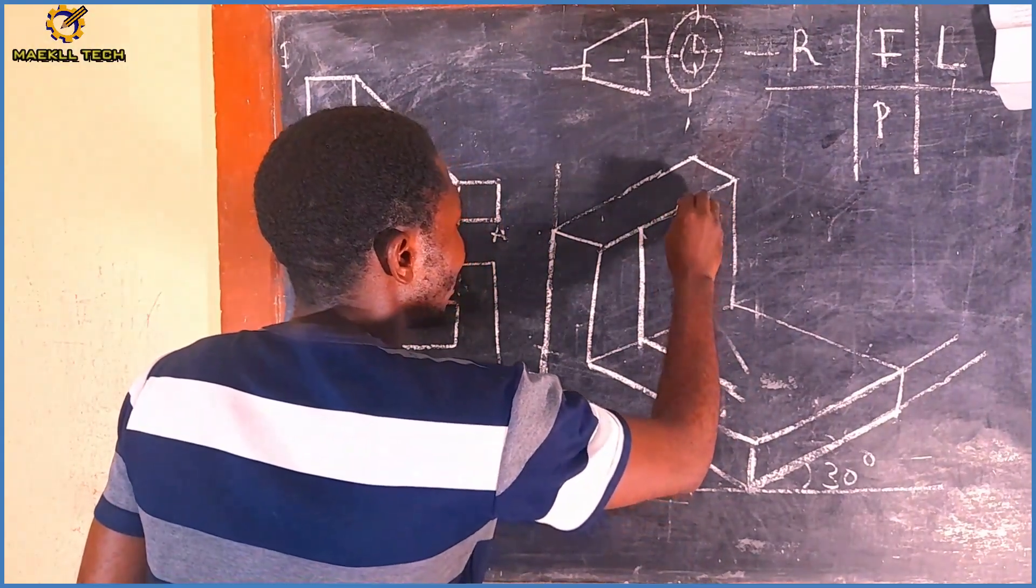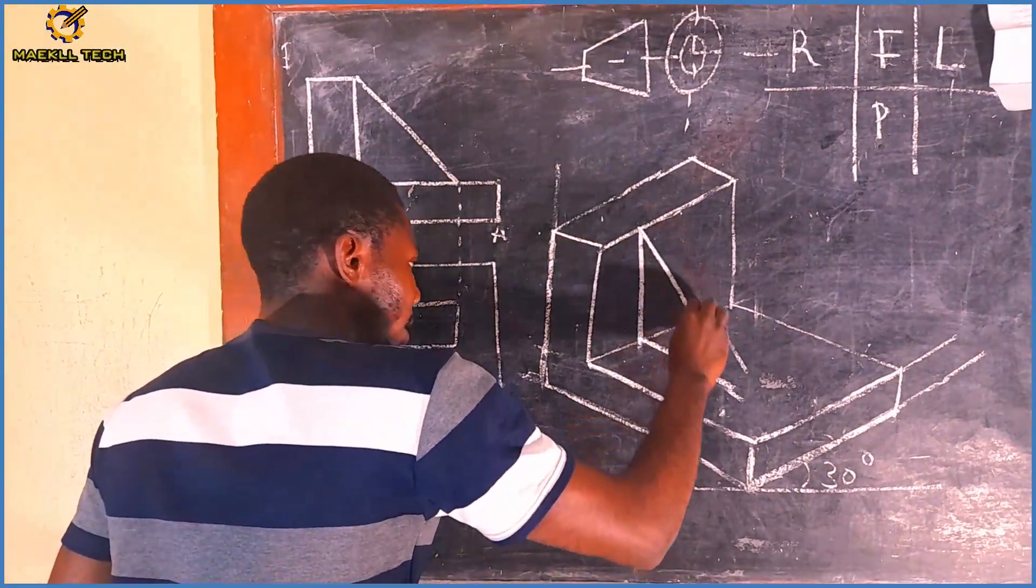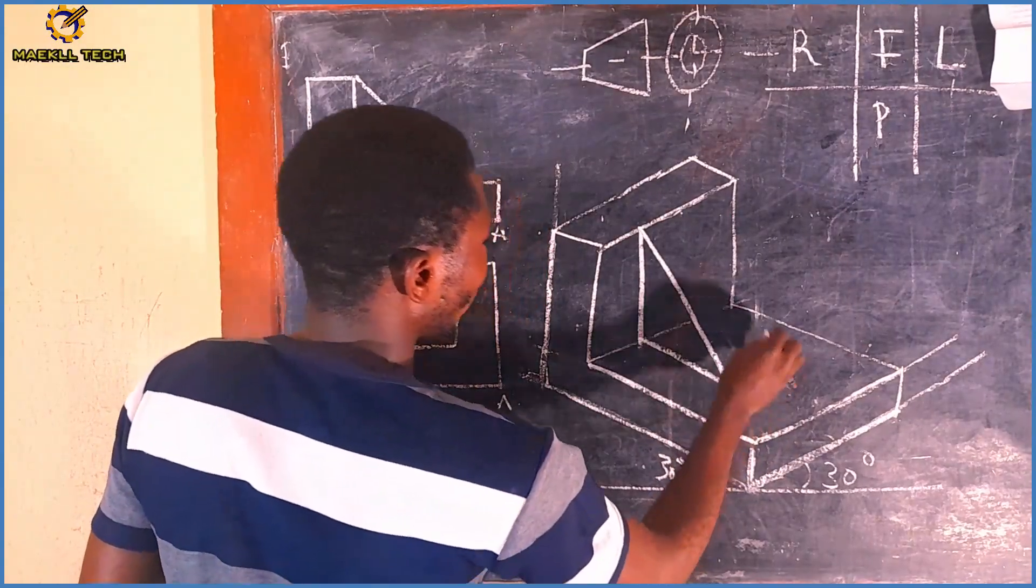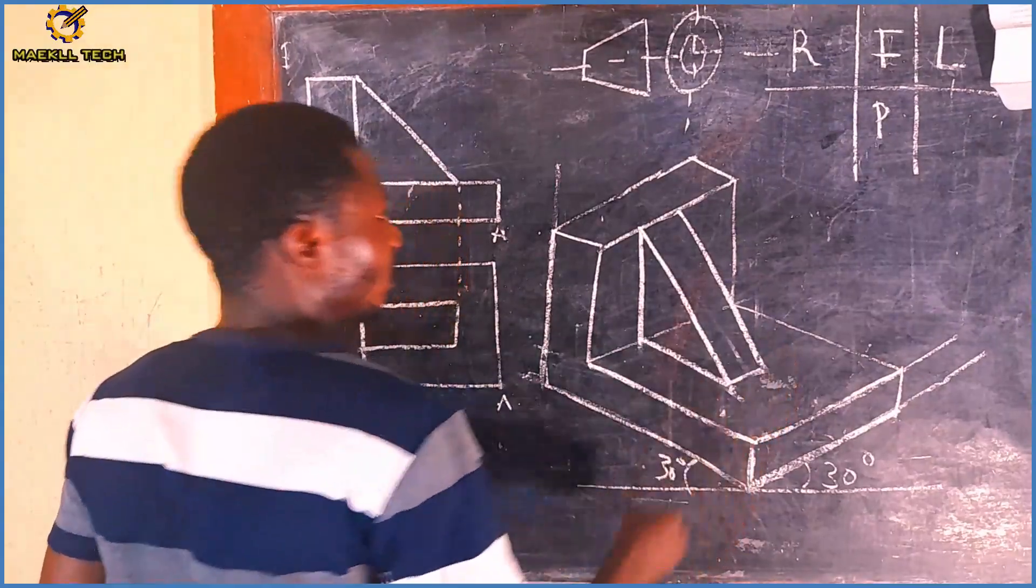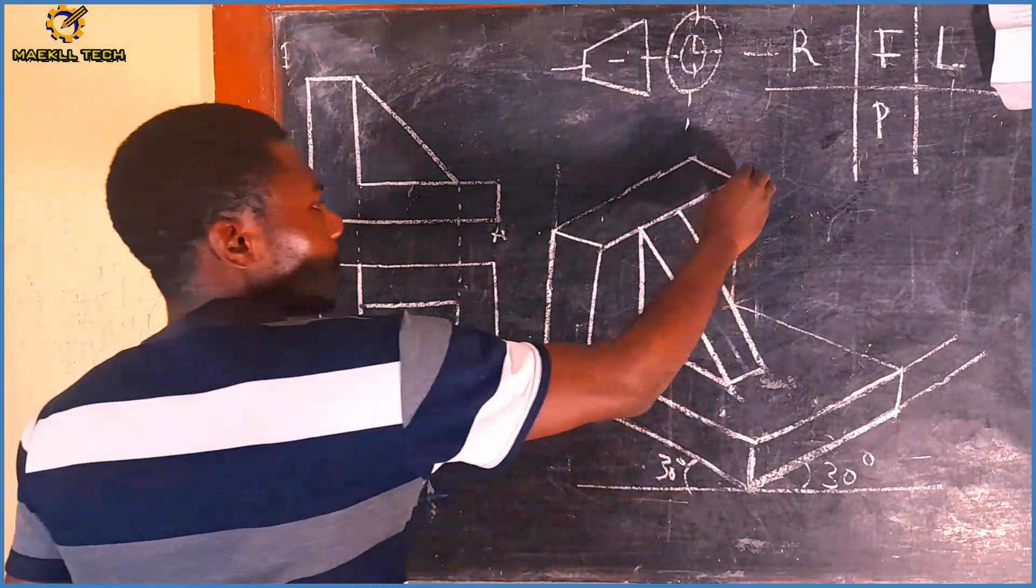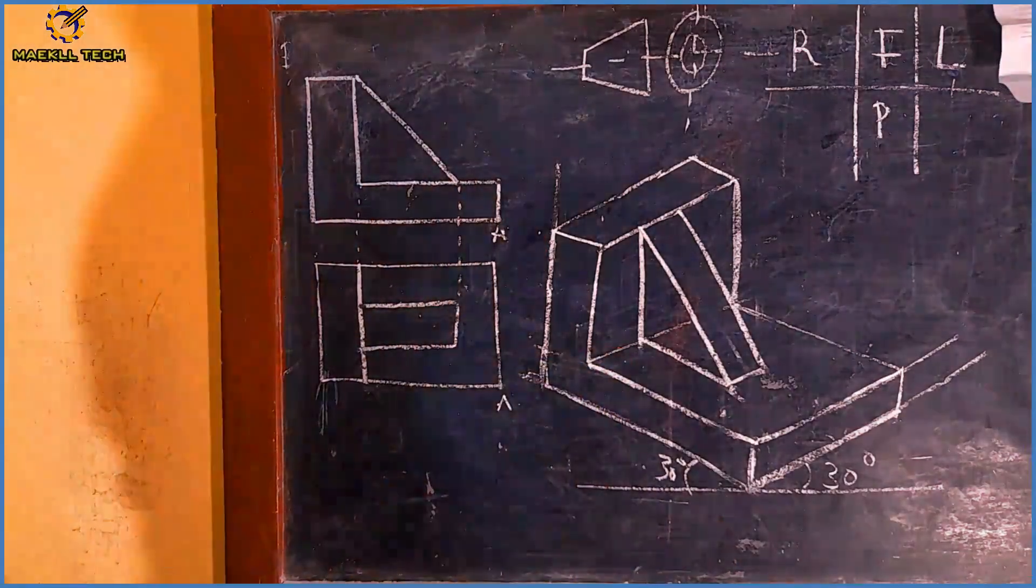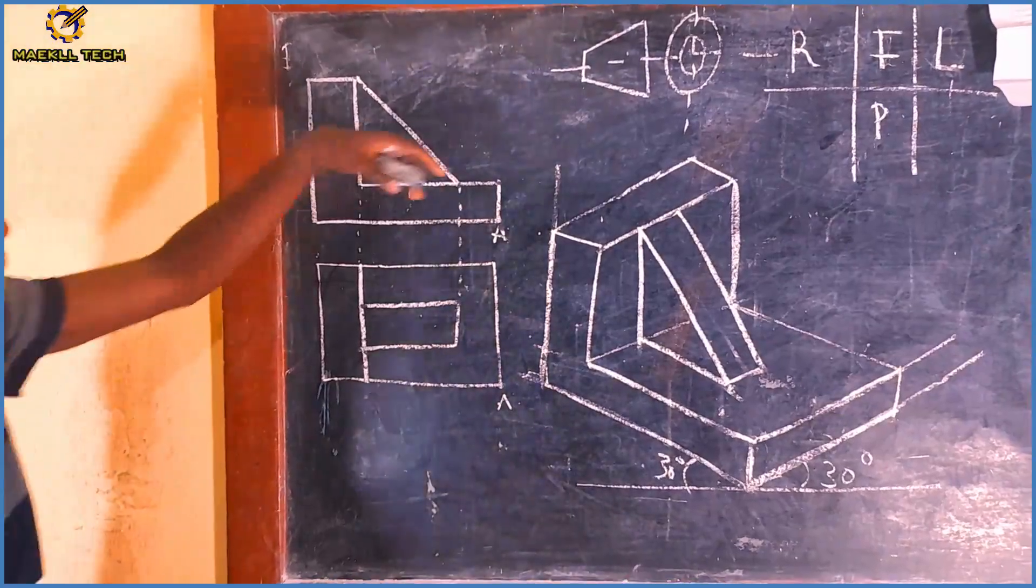This comes here like that, it goes inward here, this comes here like this. So yeah, this should be our object. Look at it orthographically. My plan.